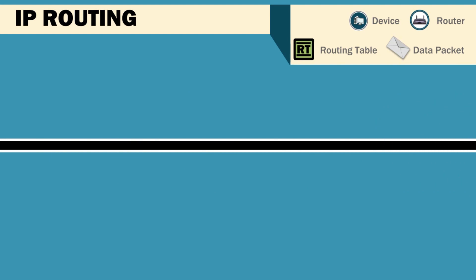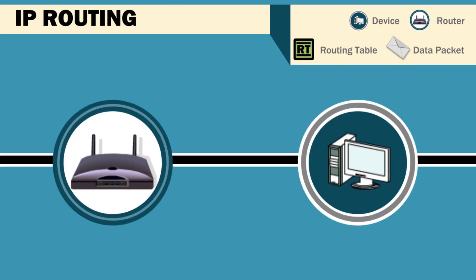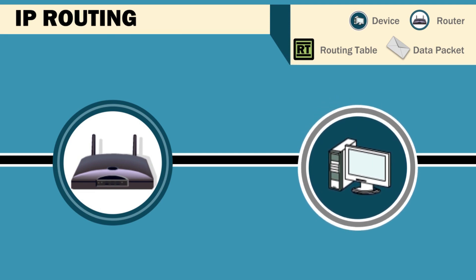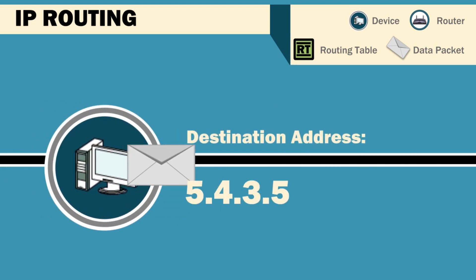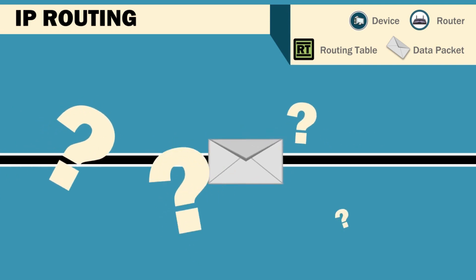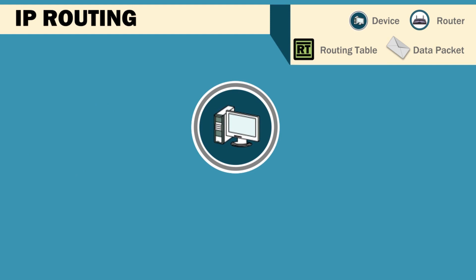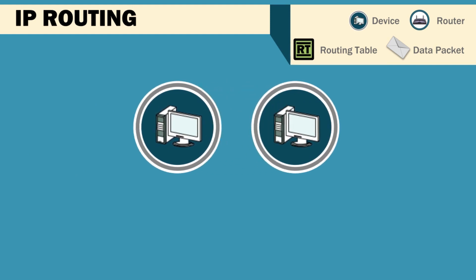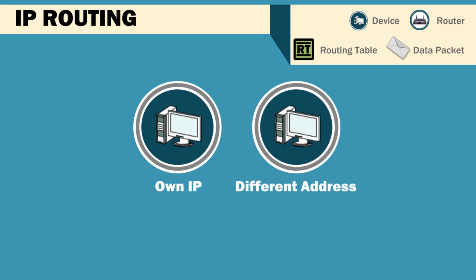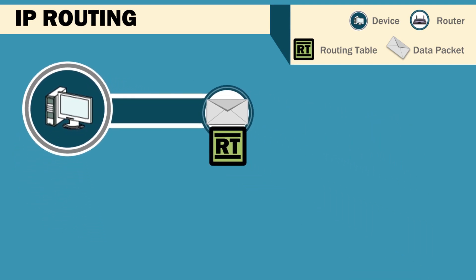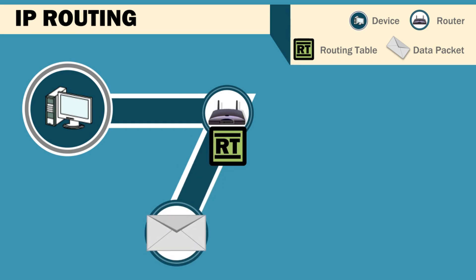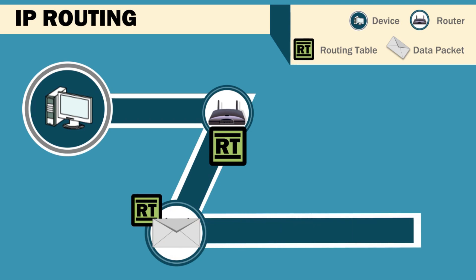Let's look at this in action. Our network is composed of routers and end devices. This device wants to send a packet to another computer. All it knows is the destination address is 5.4.3.5. How does it get the packet to where it's going? The originating device knows it has to send the packet to a different network, because the network portion of the IP address is different from its own. So it sends the packet out to its gateway router, which uses its routing table to determine it has a direct connection to the destination.